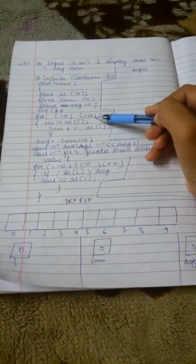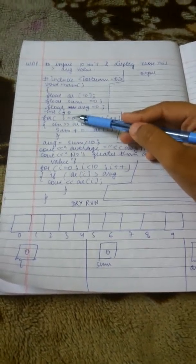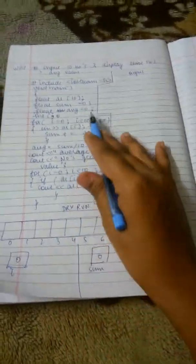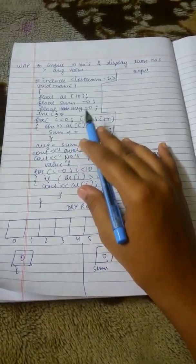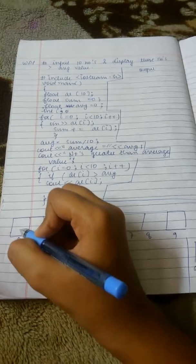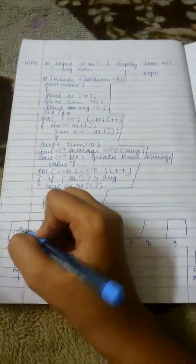Now, starting from the first loop, i is 0, 0 is less than 10, it is cin ar[i]. We have to input a number in the box ar[0] here. I will enter 100. My sum is 0 initially, it will become 100.